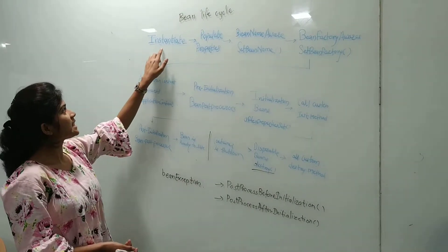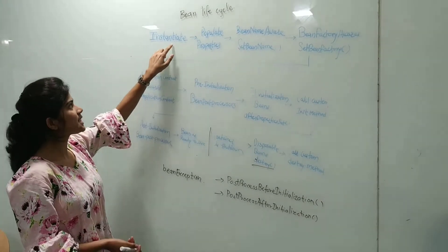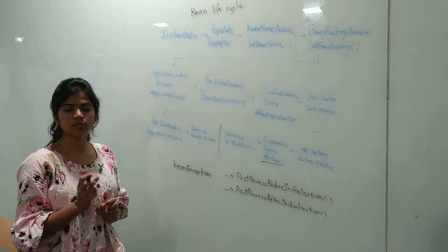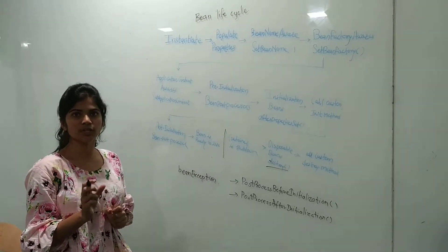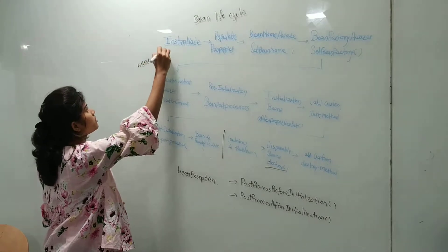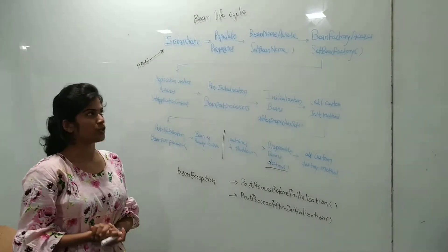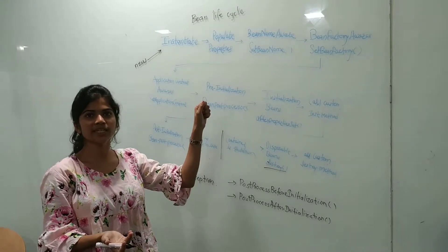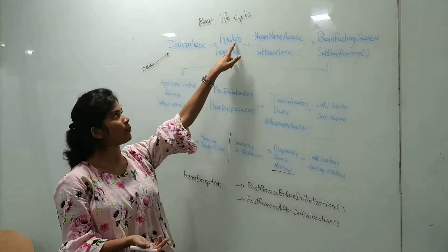First is instantiation. Whenever we create an object, we use the keyword 'new' to instantiate the object. And whenever we want to populate the properties in it, we make use of populate property.